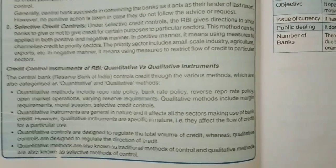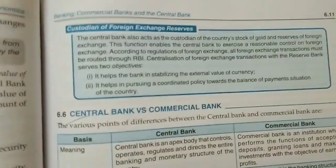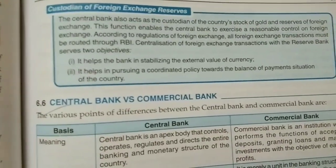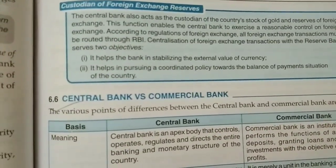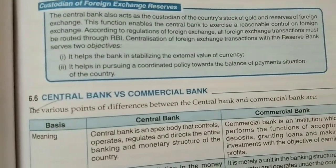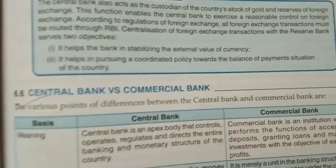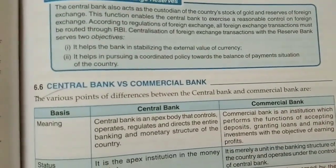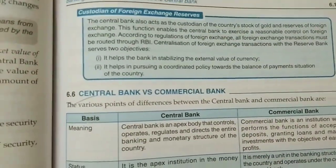Now, custodian of foreign exchange reserves. The central bank also acts as a custodian of foreign exchange reserves, meaning the central bank holds the stock of gold and reserves of foreign exchange. This is done for two objectives: it helps in establishing the external value of currency so that it can be stabilized, and it helps in pursuing a coordinated policy towards the balance of payments situation of the country.